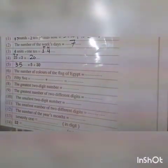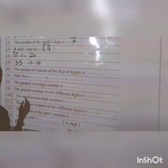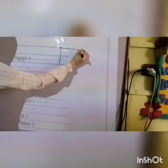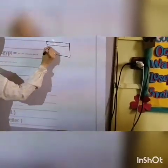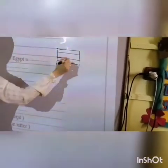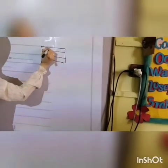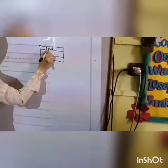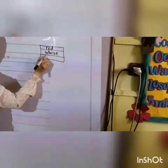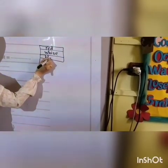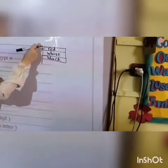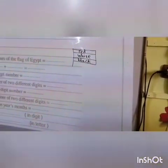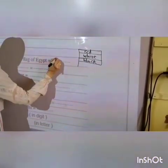Number six: the number of colors of the flag of Egypt. Here we have the flag of Egypt. The colors are red, white, and black. So how many colors? Good job — we have three colors.